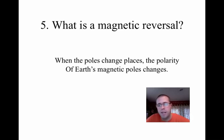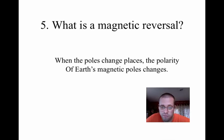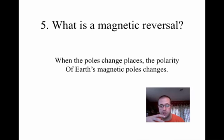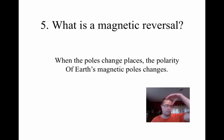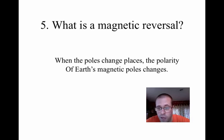Number five: what's a magnetic reversal? Simply put, this is when the poles change places — the north we know, where our compass points, flip-flops and is now at the south pole. The polarity changes — that's a magnetic reversal. Our normal north-south orientation flip-flops, and we have discovered this has happened many times throughout Earth's geologic history.